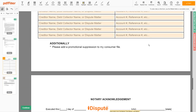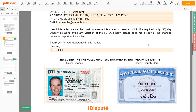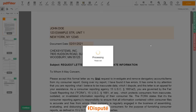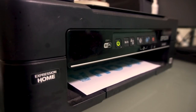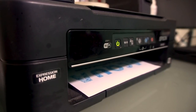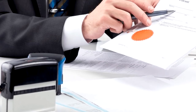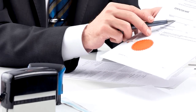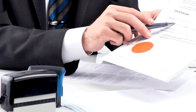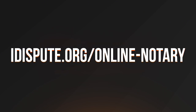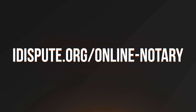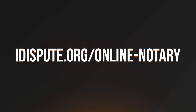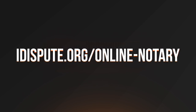Good job — your document is ready. Check your personal information one more time and click the BUY button. Proceed with the payment to download and print the document from your computer. Before the final step, you need to notarize your document. Be sure to keep the original copy of the letter for your records. For your convenience, please use the online notary service by following the link idispute.org/online-notary.